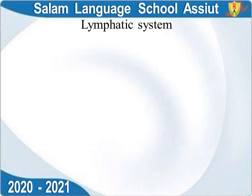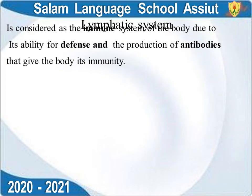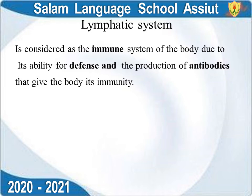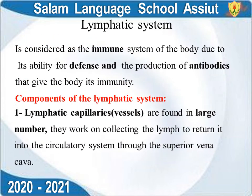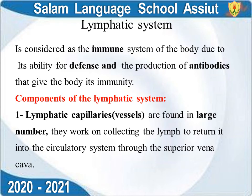The lymphatic system is the second system used in transportation in the human body, in addition to the circulatory system. The lymphatic system is considered the immune system of the body due to its ability for defense and the production of antibodies, giving the body its immunity. Lymphatic vessels collect lymph and return it to the circulatory system through the superior vena cava.